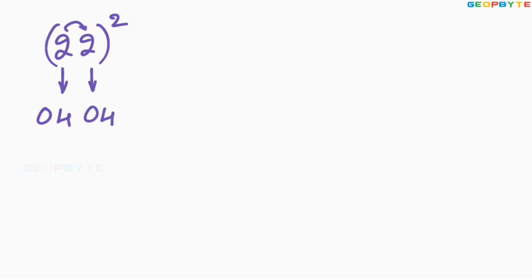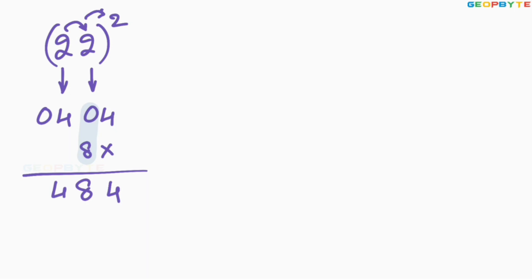I hope you clearly got my point. Similarly, let us take the 22 square. 22 whole square: 2 square is 04, again 2 square is 04. 2 into 2 is 4, 4 into 2 is 8. Leave the first space, write 8 here. Add these two values: 4, 0 plus 8 is 8, 4. Therefore, 22 square is equal to 484.